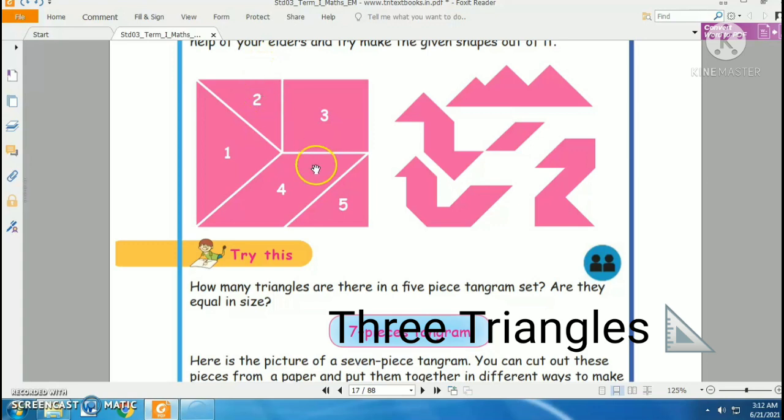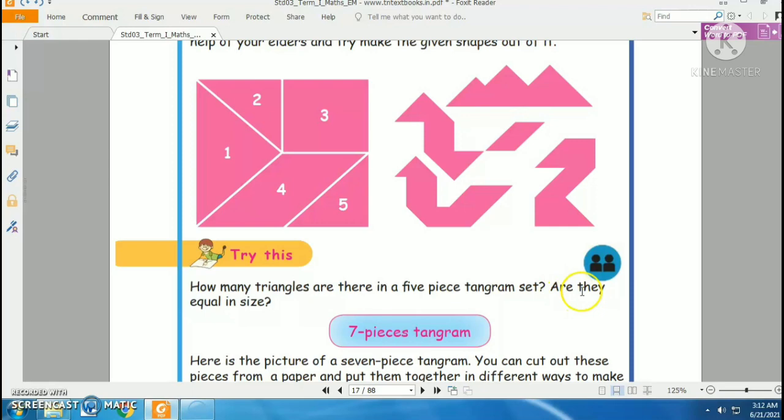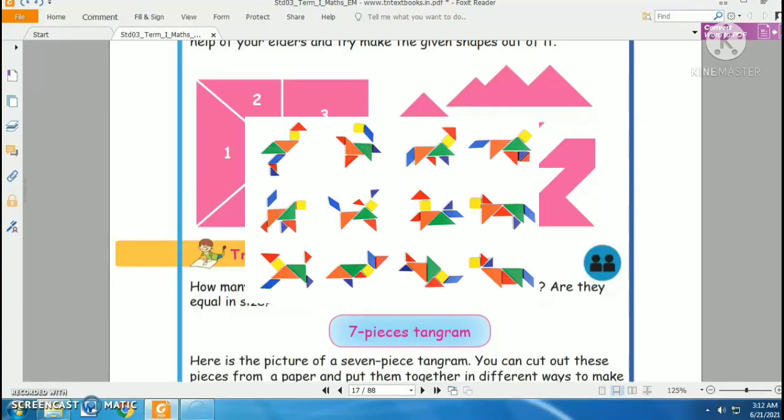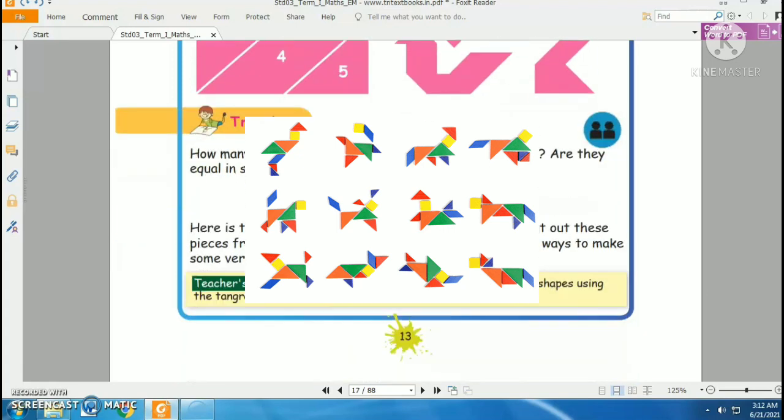The second part of the question is: Are they equal in size? No, not exactly. They are unequal in size. Now you can cut out these pieces, two triangles from paper or cardboard, and put them together in different ways to make some very interesting shapes.